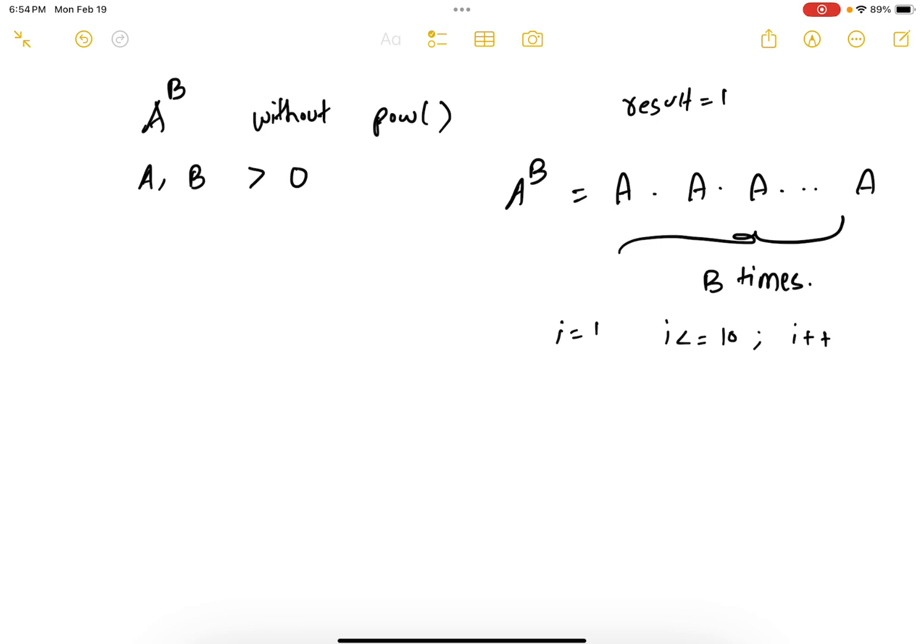Now how do you execute the loop b times? So you start with 1 and you go all the way up to b in steps of 1. And during every iteration I'm going to multiply a with the result and store the value back in result.